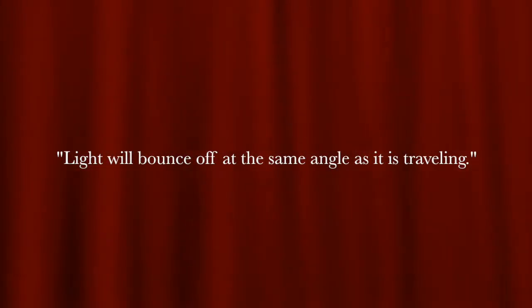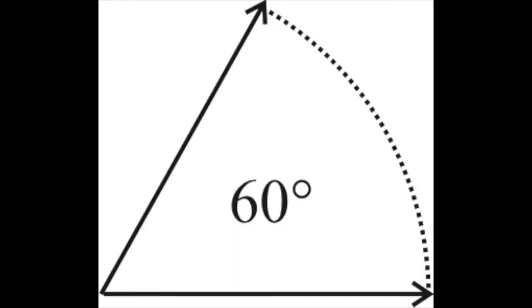Now let's talk about the law of reflection. The law states: light will bounce off at the same angle as it is traveling. Before light hits an object, the angle it is at is called the angle of incidence. After bouncing, the angle light is at is called the angle of reflection. For example, if light hits a regular mirror at 60 degrees, light would bounce off also at 60 degrees.